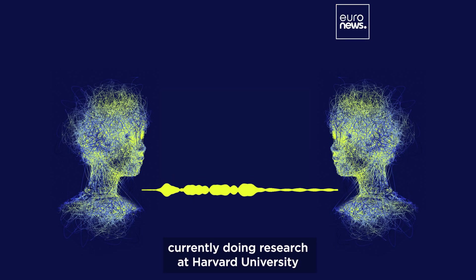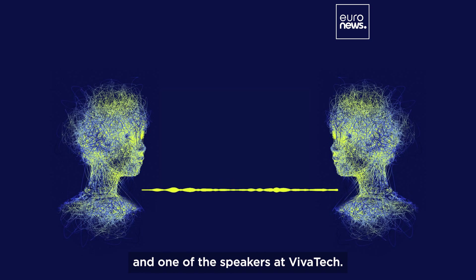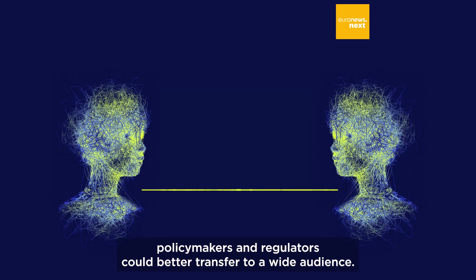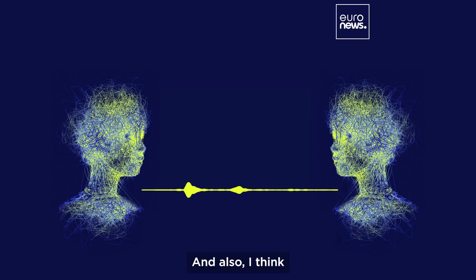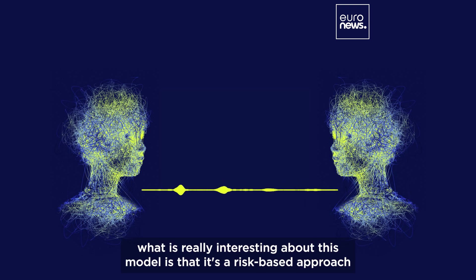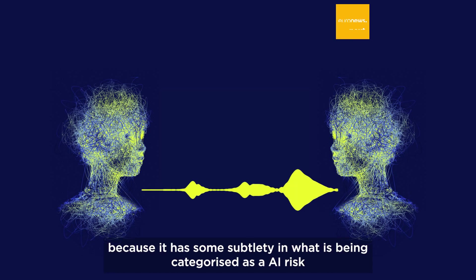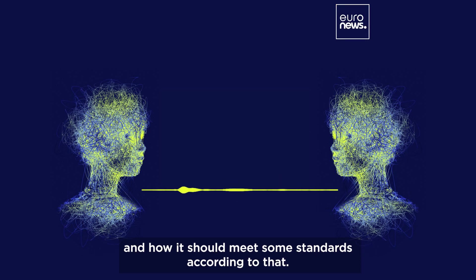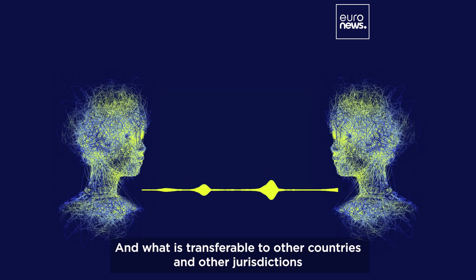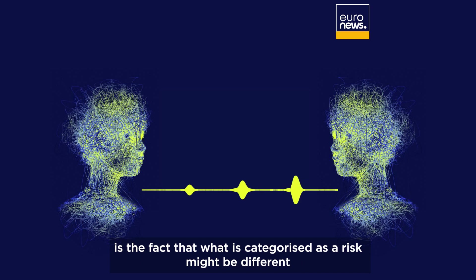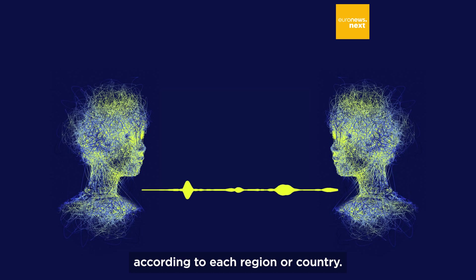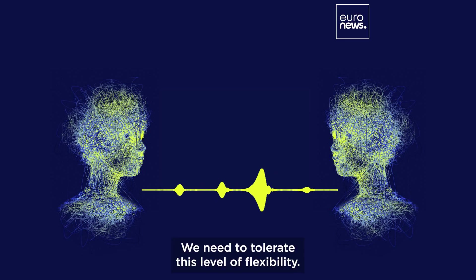To answer this question, we spoke with Satya Alanoka, an AI governance expert currently doing research at Harvard University and one of the speakers at VivaTech. This is a historical moment that I really wish policymakers and regulators could better transfer to a wide audience. What is really interesting about this model is that it's a risk-based approach proposing some level of granularity because it has some subtlety in what is being categorized as an AI risk and how it should meet some standards. What is transferable to other countries and other jurisdictions is the fact that what is categorized as a risk might be different according to each regional country. This is very important - we need to tolerate this level of flexibility.